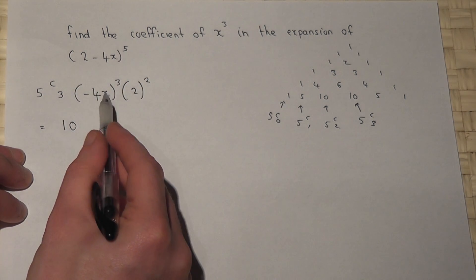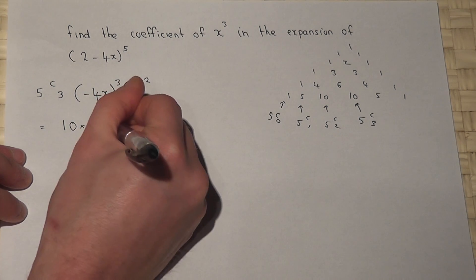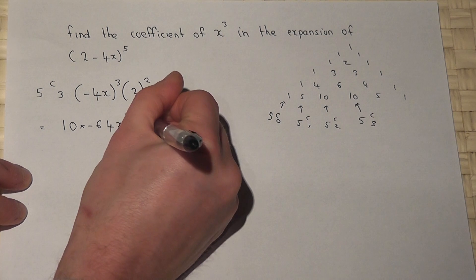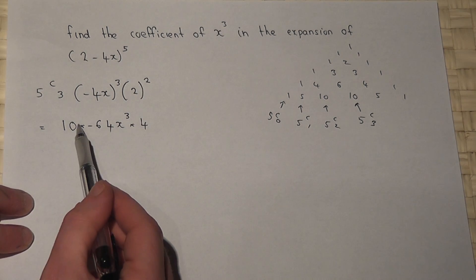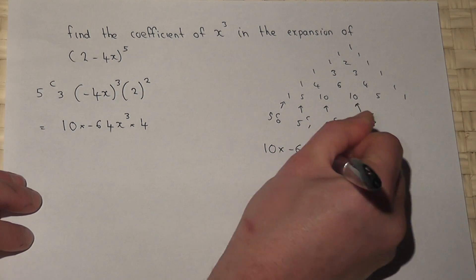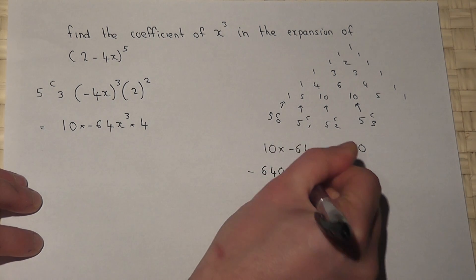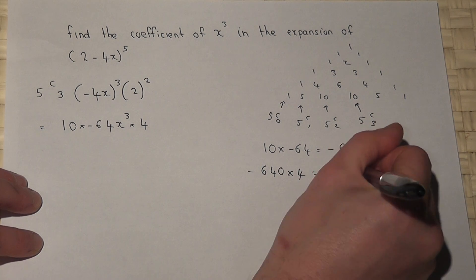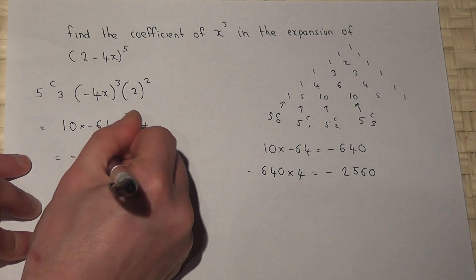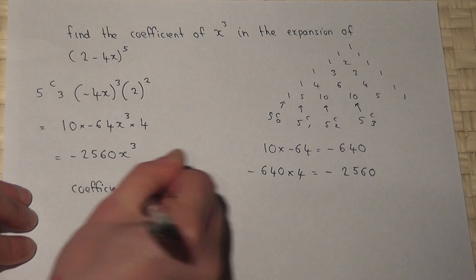So this term is 5C3 which is 10. Then we have minus 4x to the power of 3: minus 4 to the power of 3 is minus 64, x cubed is just x cubed, and 2 squared is just 4. So the coefficient is 10 times minus 64 times 4. Well, 10 times minus 64 is minus 640, and then I must multiply this by 4, giving minus 2560. So the term is minus 2560 x cubed, and the coefficient is just minus 2560.